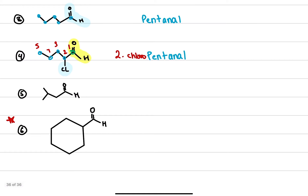Now let's do example five. I have one, two, three, four, five carbons, but we can clearly see the longest carbon chain has four carbons, so I'm going to call this 'but-'. I see a COH group, so it's an aldehyde — butanal. But let's not forget there is an alkyl group here as well — a methyl group. We number the chain: one, two, three, four. The methyl group is located on the third carbon, so this is 3-methylbutanal.